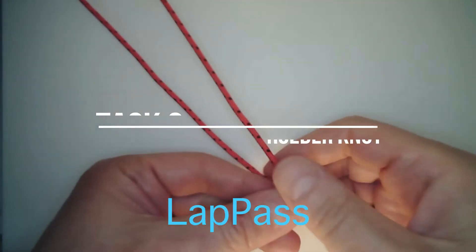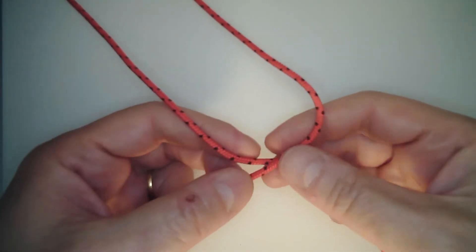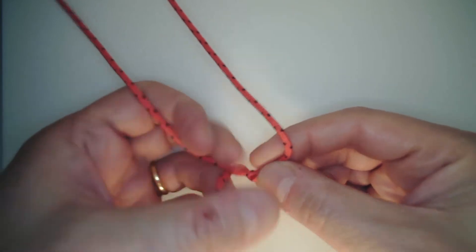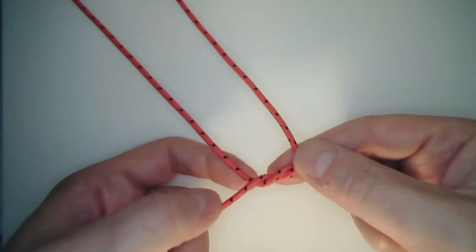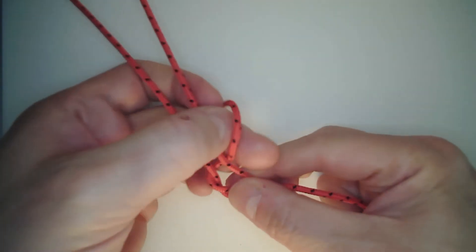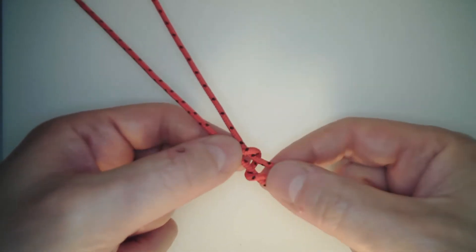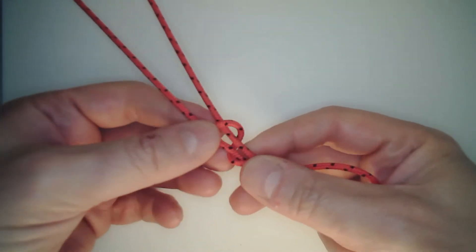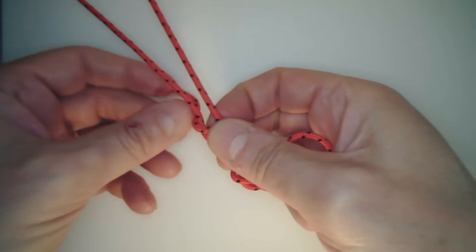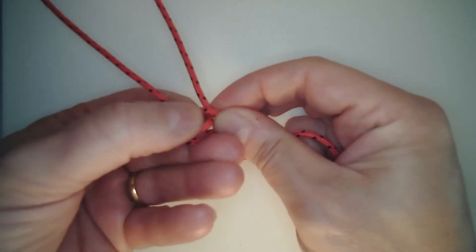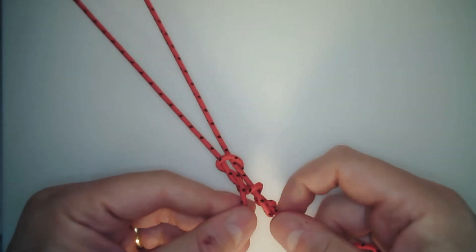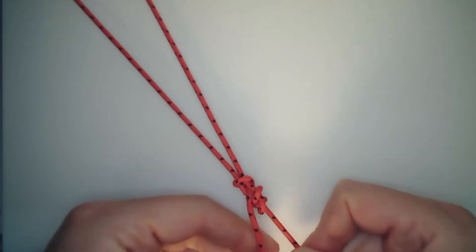Welcome to task two which involves forming an extracorporeal Roeder knot. I will demonstrate the knot which is a half knot initially, two full turns around the standing end, and then a half hitch locking knot.